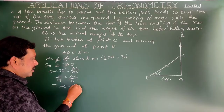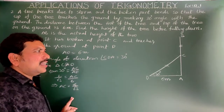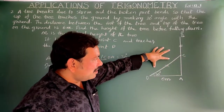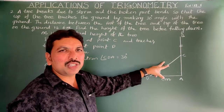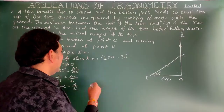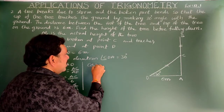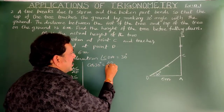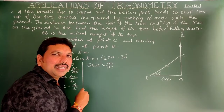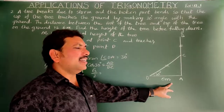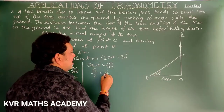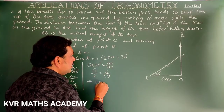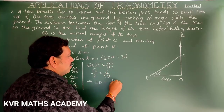tan 30° = 1/√3 = AC/6, so AC = 6/√3. Next, using cos 30° = AD/DC: cos 30° = √3/2 = 6/CD. So CD = 12/√3.